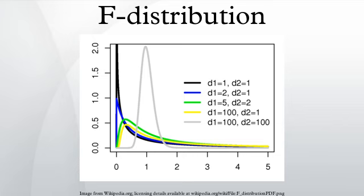For d2 greater than 8, the excess kurtosis is given. The kth moment of an F(d1, d2) distribution exists and is finite only when 2k < d2, and it is equal to the given formula.